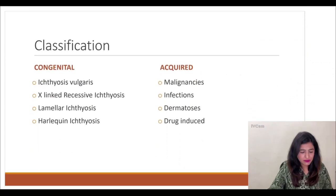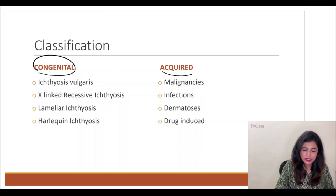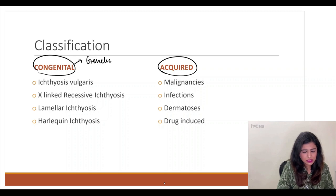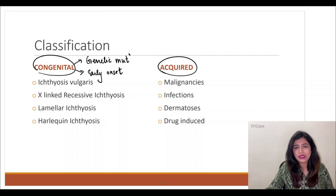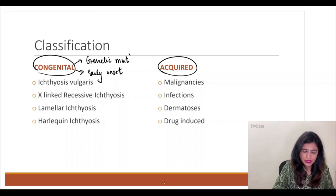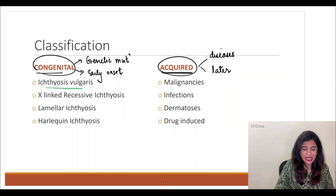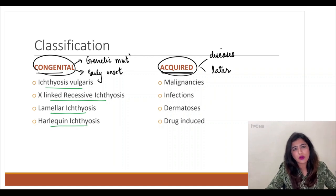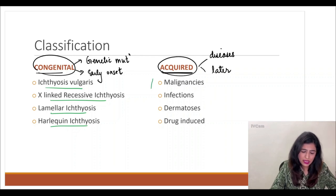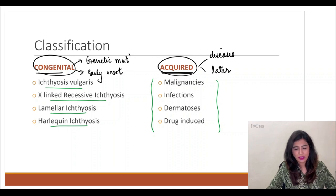Ichthyosis is classified into two types: congenital and acquired. Congenital ichthyosis is due to genetic mutation and is early onset, visible early in life. Acquired ichthyosis happens due to different diseases or disorders and appears later in life. The important congenital types include ichthyosis vulgaris, X-linked recessive ichthyosis, lamellar ichthyosis, and harlequin ichthyosis — all important for MCQs.